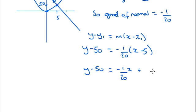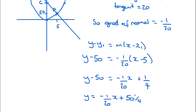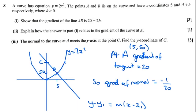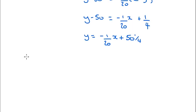So we're going to get plus 5 over 20, which is a quarter. So then if I move the 50 over, we're going to get negative 1 over 20 x plus 50 and a quarter. So that is my C value, the y-intercept. So C's y-coordinate is 50 and a quarter, or 50.25.